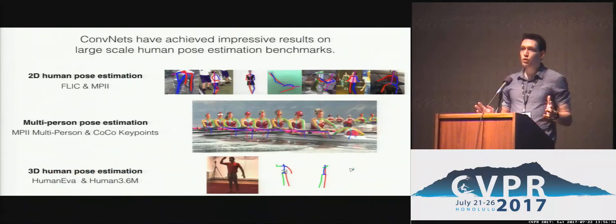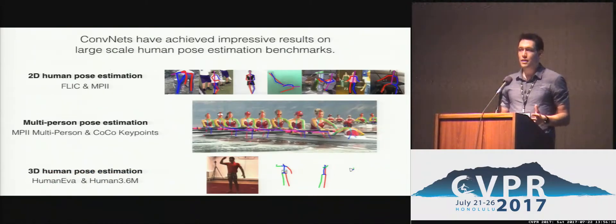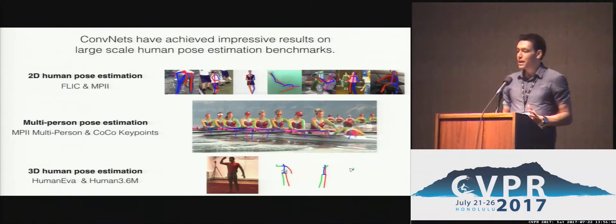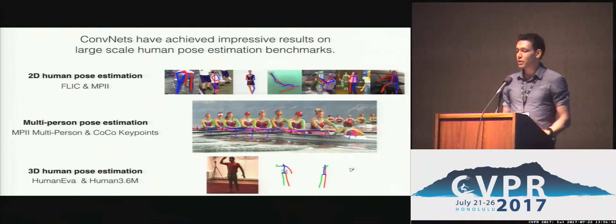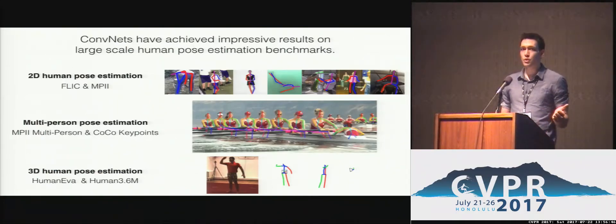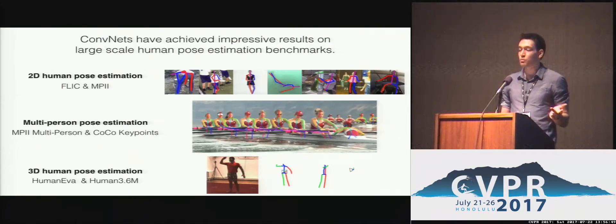If convolutional neural networks have told us one thing, it is that it is all about the data you have. In particular, for human pose estimation tasks, the availability of huge benchmarks has improved the performance for 2D human pose estimation, multi-person pose estimation, as well as 3D human pose estimation.